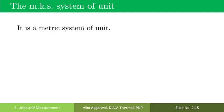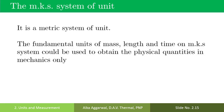Next is the MKS system of units. It is a metric system of units, closely related to the CGS system. In this system, length is measured in meter, mass is measured in kilogram, and time in second. The drawback of the MKS system is that the fundamental units of mass, length, and time can be used to obtain physical quantities in mechanics but cannot be used in heat, thermodynamics, optics, and modern physics. So it is required to extend the MKS system of units.